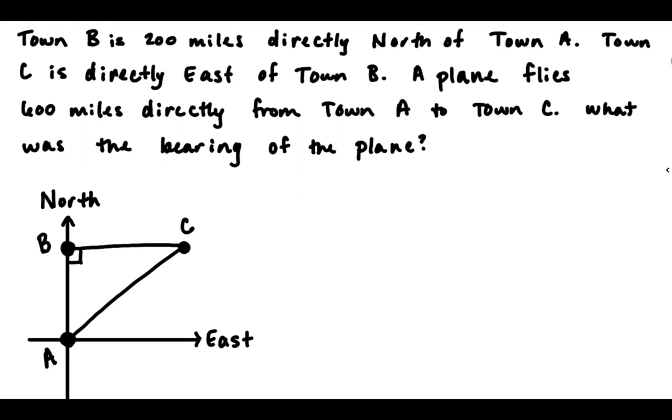Now let's follow our word problem process, where we go through, we use the information to label our diagram, and then we're going to write an equation. So I'm going to read through again, this time highlighting important information. Town B is 200 miles north of town A, so we have the 200 miles. So where is that on our diagram? Town B to town A is this leg here, so that's my blue leg, and that we know is 200 miles.